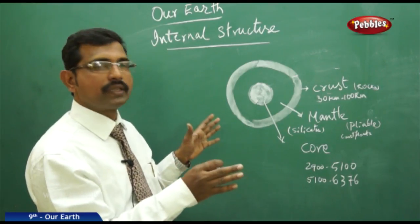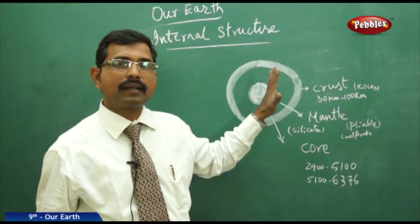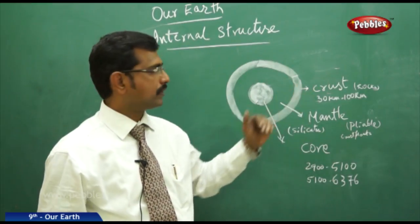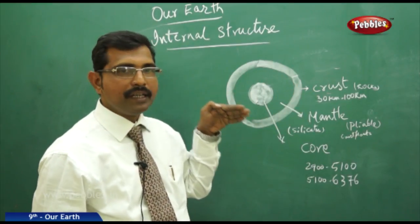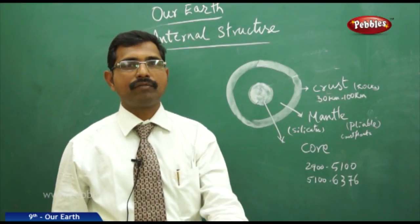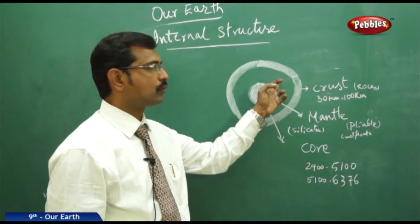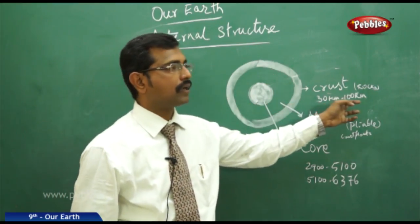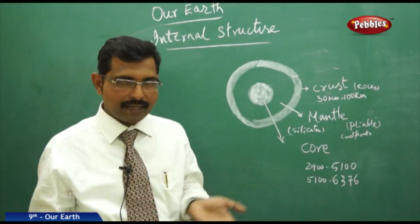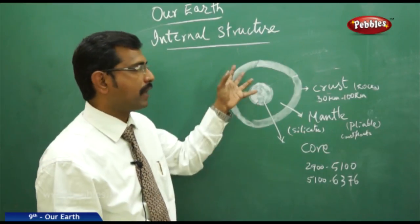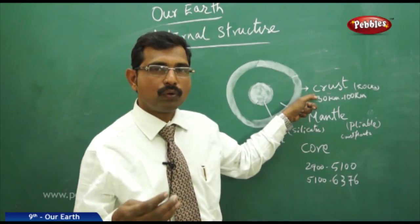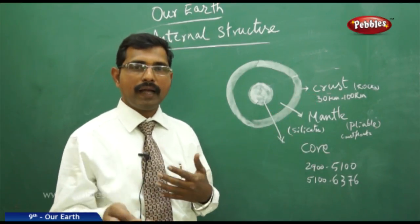The topmost layer of the earth is called the crust, where we are all living and getting resources. If you go deeper from the ocean, around 35-40 km, you will enter into the mantle part. From the top of the hill it's around 30 km to 100 km where you will find the crust layer, which is the first part of our earth planet.